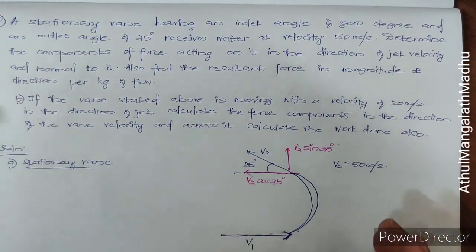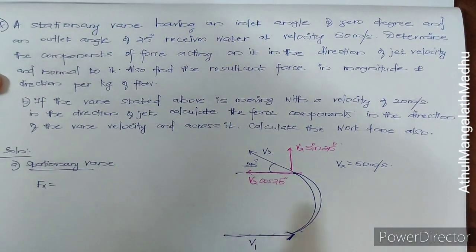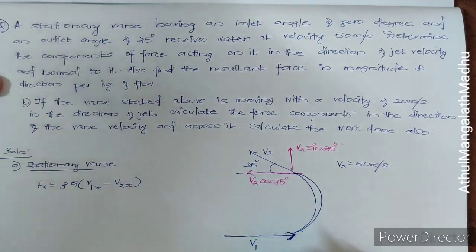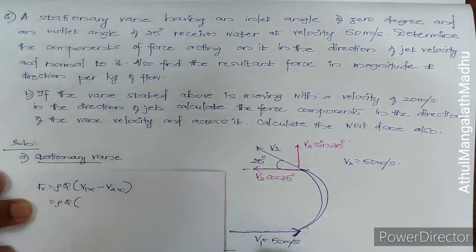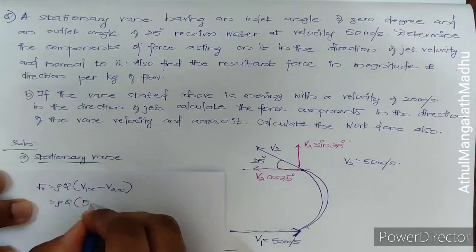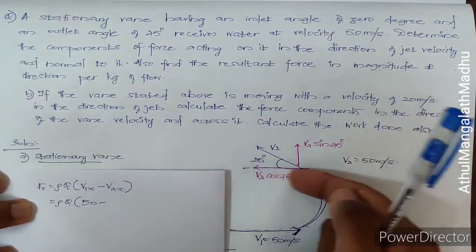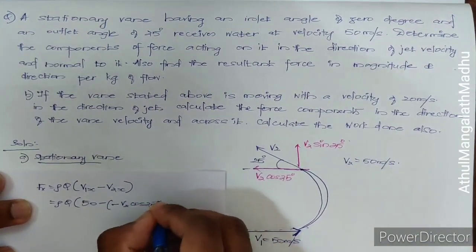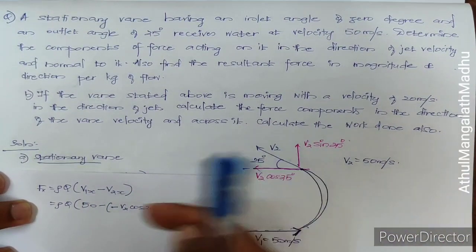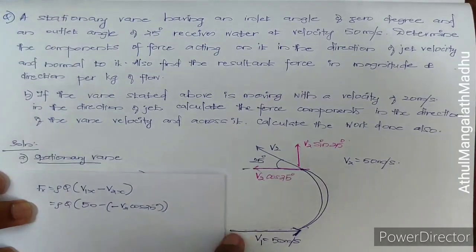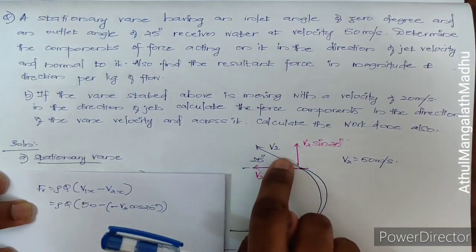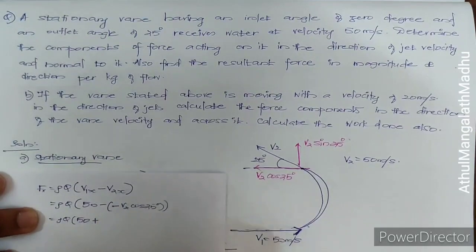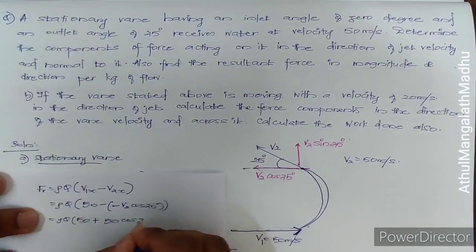Since we have a curved vane, we use the equation for force in the x-direction: Fx = ρq(v1x − v2x). The initial velocity in x-direction is 50 m/s. The final velocity in x-direction is v2 cos25 and it is directed towards the left side, so we get a negative sign. That gives us Fx = ρq(50 + v2 cos25°), where v2 = 50 m/s.